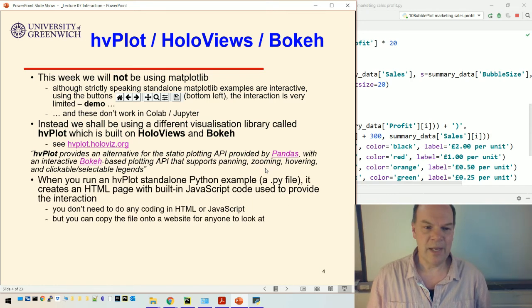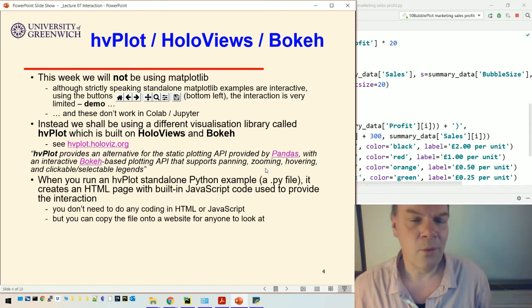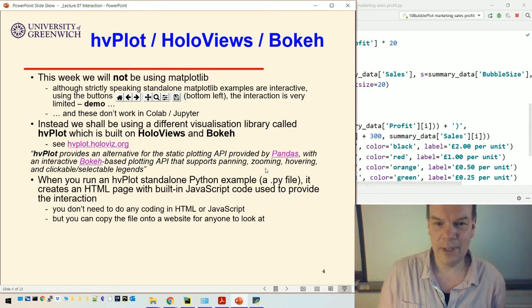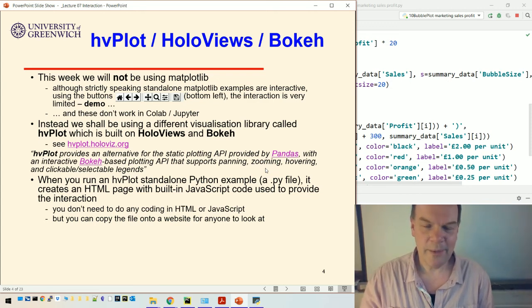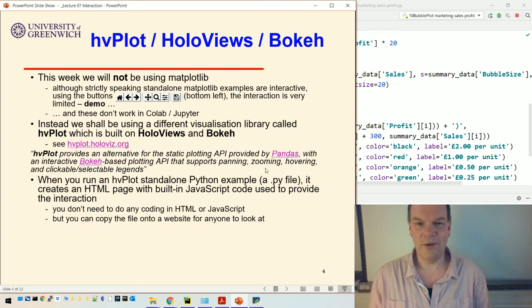So there's a bit more available here, and we'll see in particular the selectable legends can be really useful. When you run this in a standalone, so in all the examples I will be using in the lecture, what it does is it generates an HTML page with some JavaScript built in. The JavaScript is used for doing the interactive stuff and opens that in the browser. You don't need to know anything about the JavaScript or anything about HTML. It just creates this web page that opens in your browser and then you can explore it there, and you can even copy it onto a website so that somebody else could look at it.